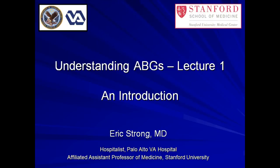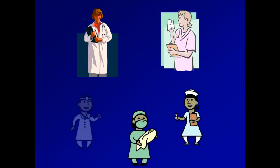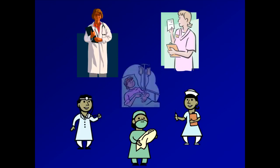In this lecture, I will first be giving a brief overview of the course as a whole. Then I will provide a summary of what an ABG is, how it's obtained, and what information it contains. The audience of this lecture series is intended to be medical house staff and critical care nurses, as well as motivated students in medicine, nursing, and respiratory therapy, all of whom will at some point be involved in the care of critically ill patients. I will be assuming only a basic background in physiology, and I will fill in additional relevant details as necessary along the way.